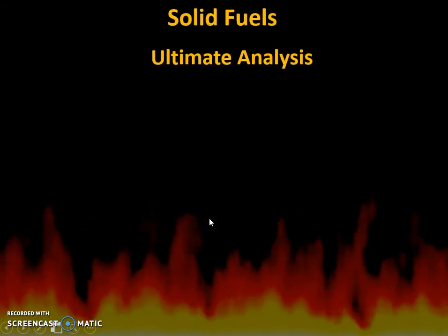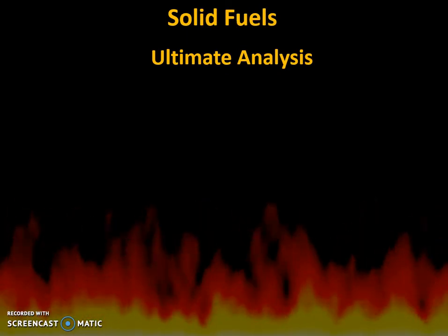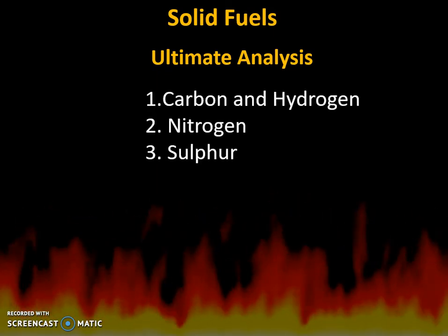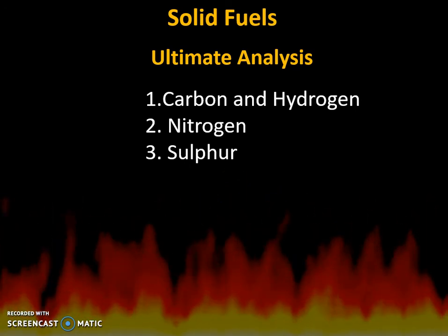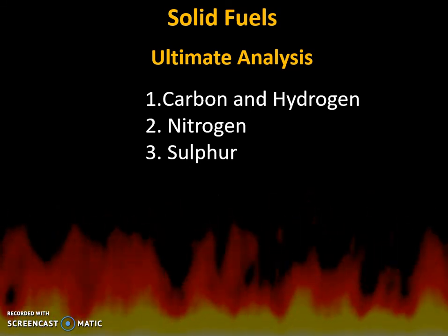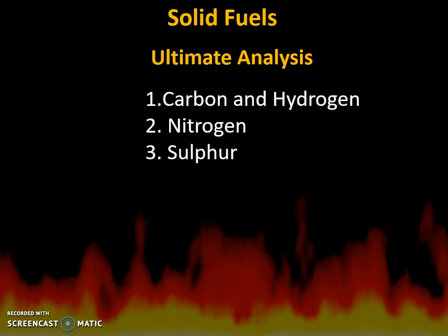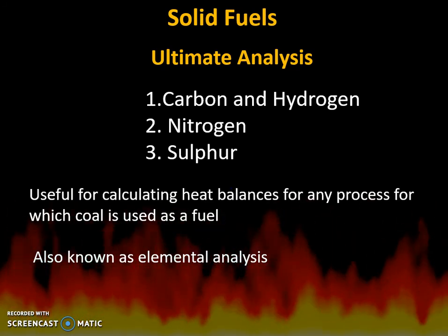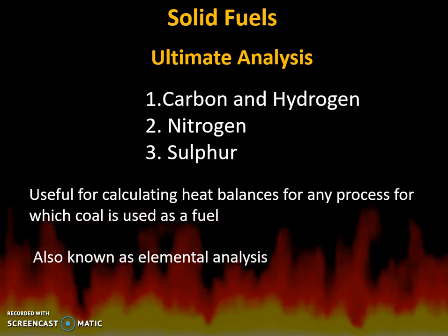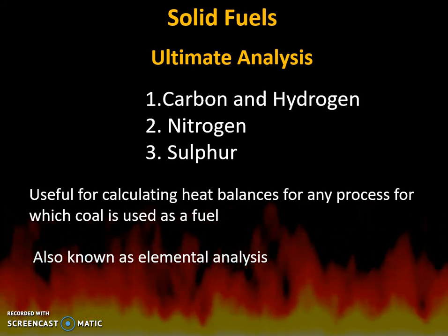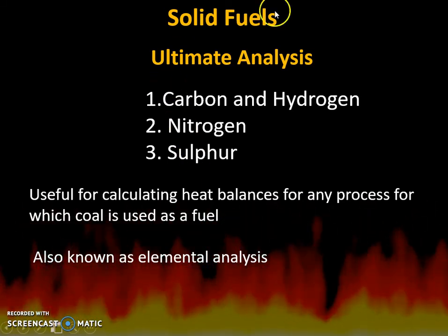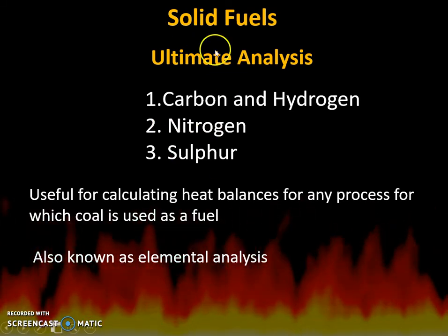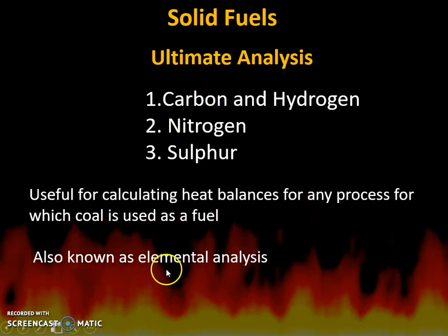The next is ultimate analysis, which is a higher step of analysis compared to proximate analysis. It includes the analysis of carbon, hydrogen, nitrogen, and sulfur. When they burn, they are converted into their oxides and the analysis is done accordingly. Ultimate analysis is useful for calculating heat balances for any process in which coal is used as a fuel, and it is also known as elemental analysis.